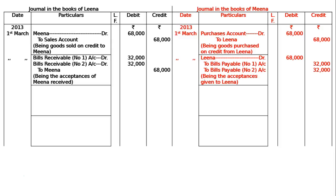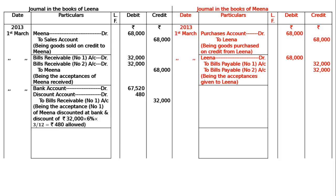Lina immediately discounted the first bill with her bank at 12% per annum. Bank account debited, discount account debited, to bills receivable number one account. Being acceptance number one of Mina discounted at bank — discount of Rs. 32,000 at the rate of 6% for three months, Rs. 480 allowed. Bank account debited Rs. 31,520, discount account debited Rs. 480, to bills receivable number one account Rs. 32,000. There will be no entry in the books of Mina.